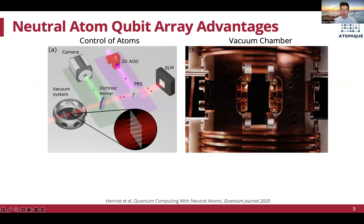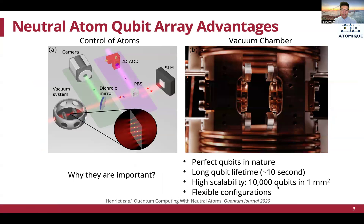In neutral atom devices, qubits are implemented with atoms in a vacuum chamber as shown on the right. Various lasers are used to control the locations of qubits and perform operations as shown on the left. Neutral atom devices have multiple unique advantages. First, because qubits are atoms, all qubits are identical and perfect. Second, compared to other technologies such as superconducting, neutral atoms have longer coherence time. Third, they have higher scalability—for example, ten thousand atoms can fit in one square millimeter. Lastly, they also have flexible configurations such as a changeable coupling map.